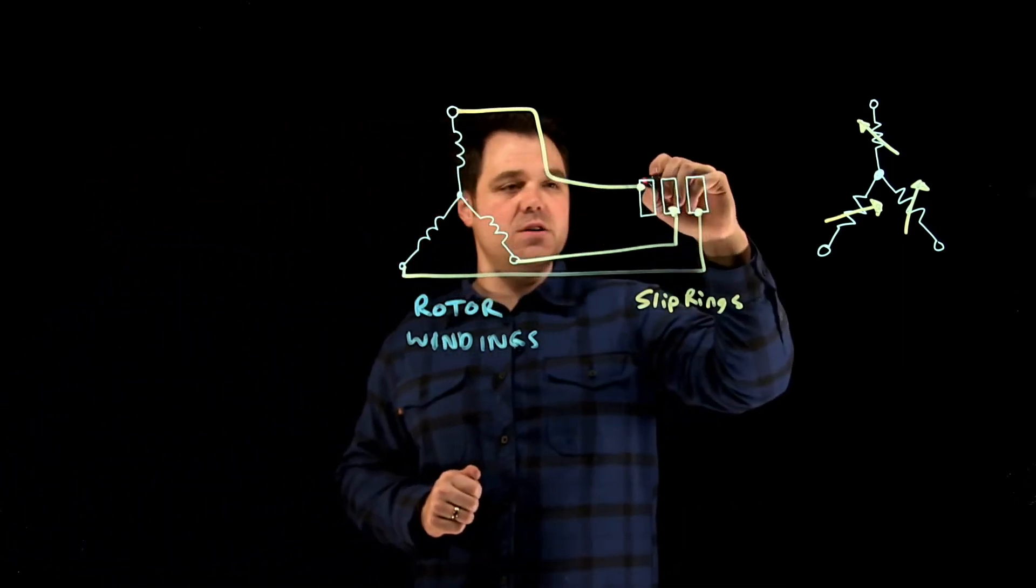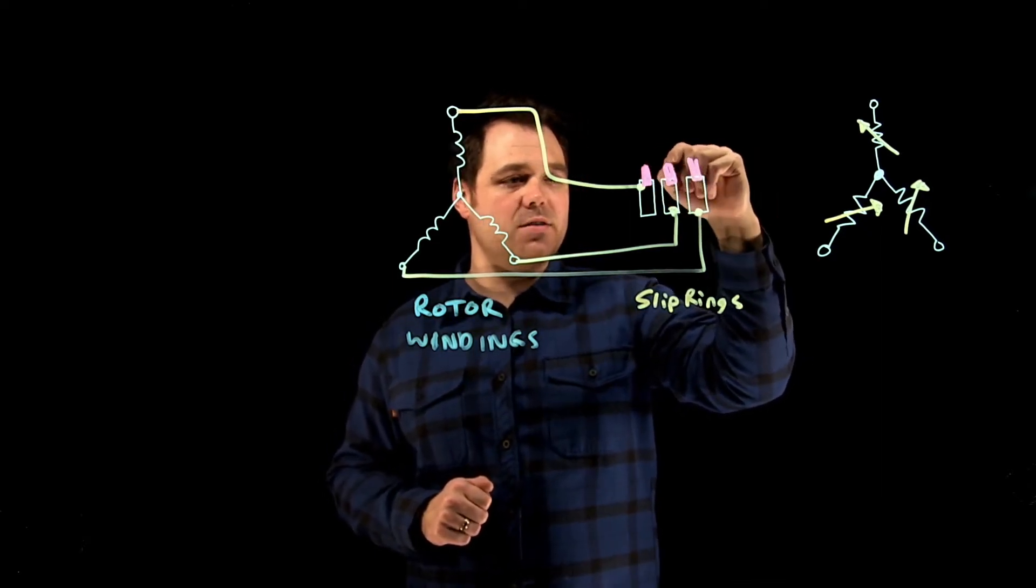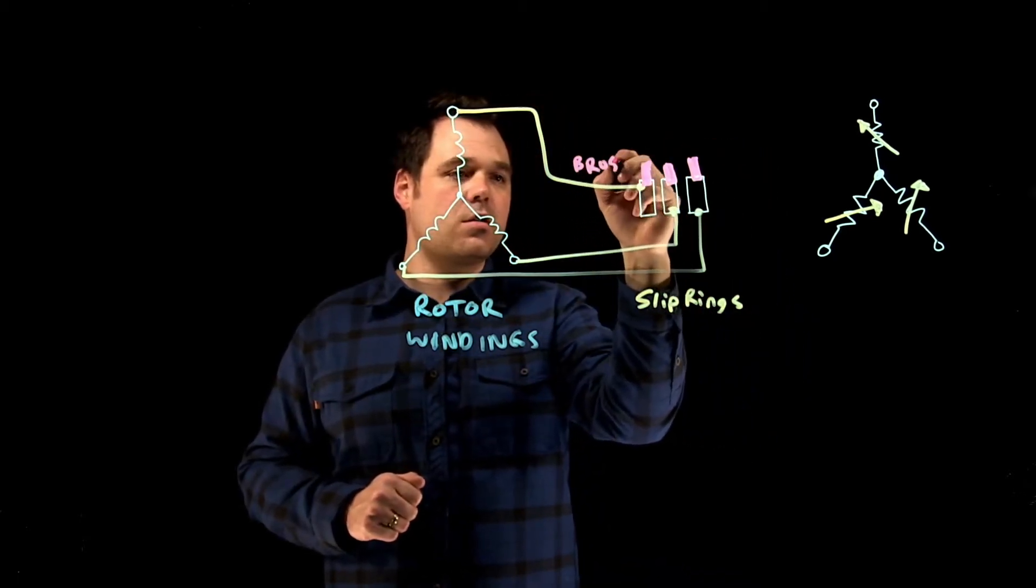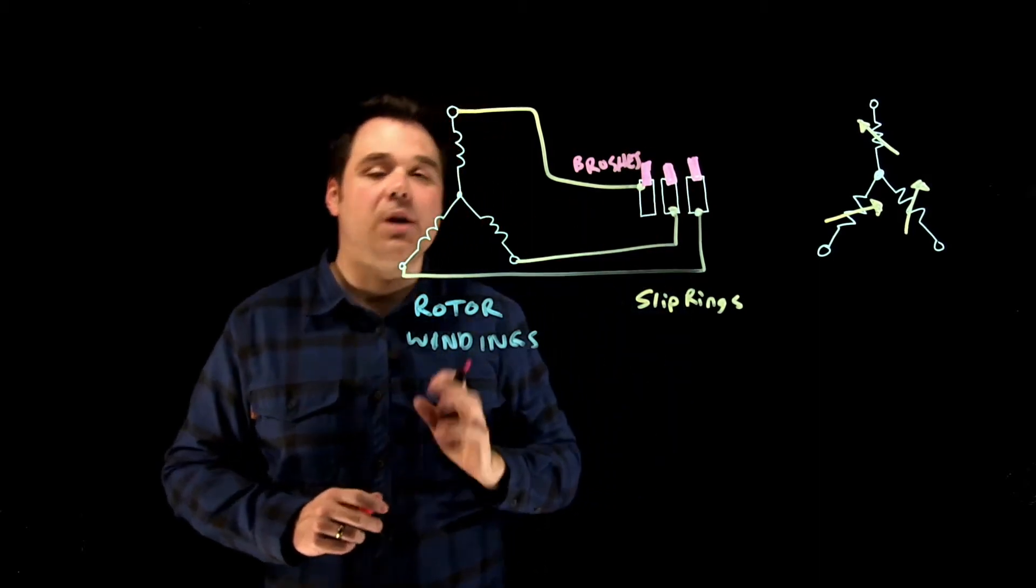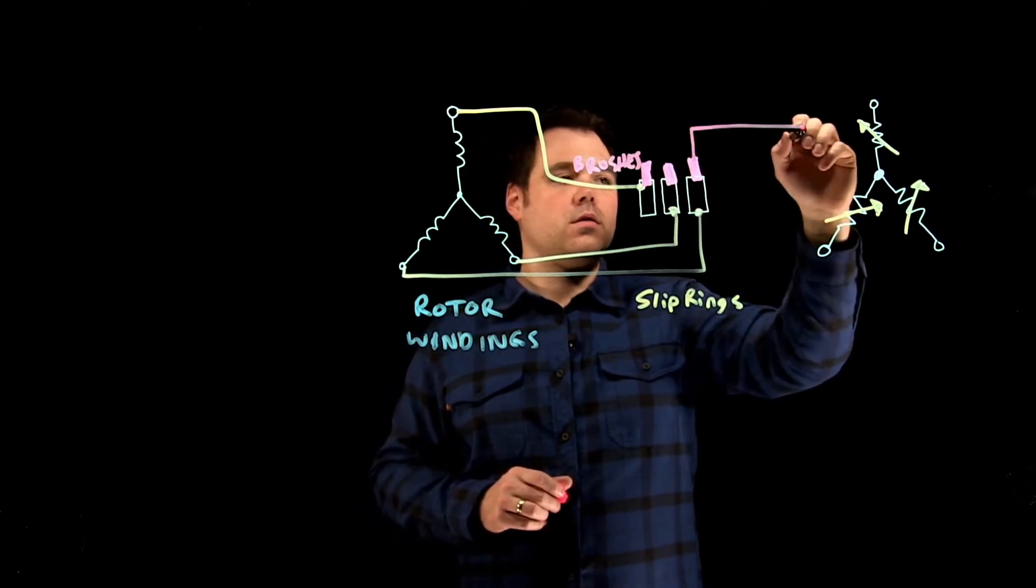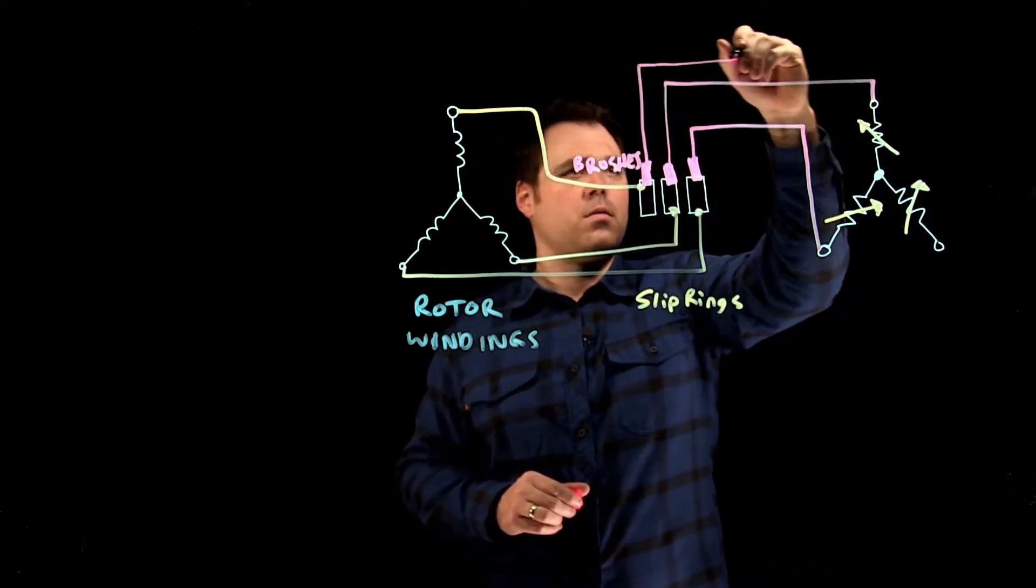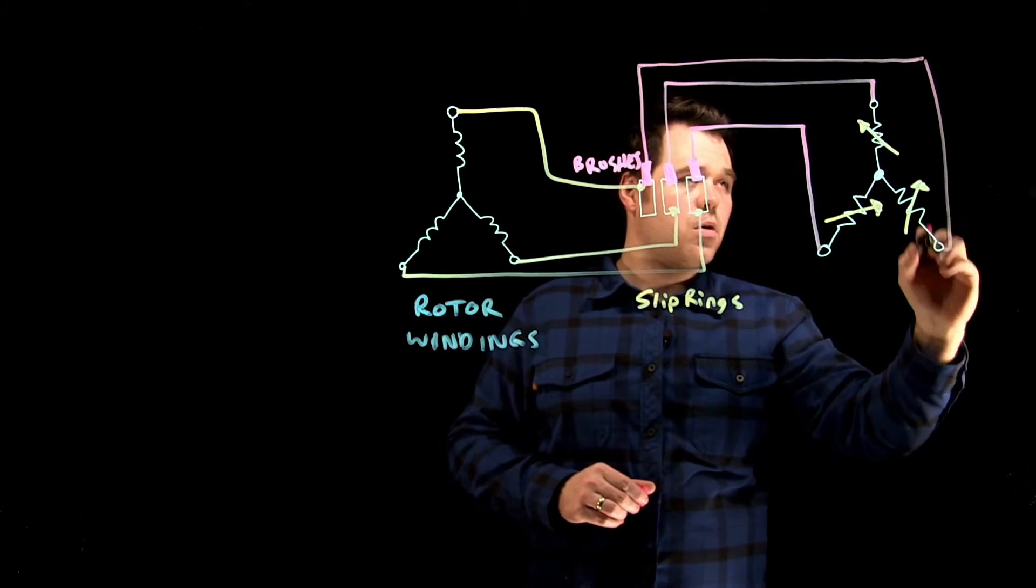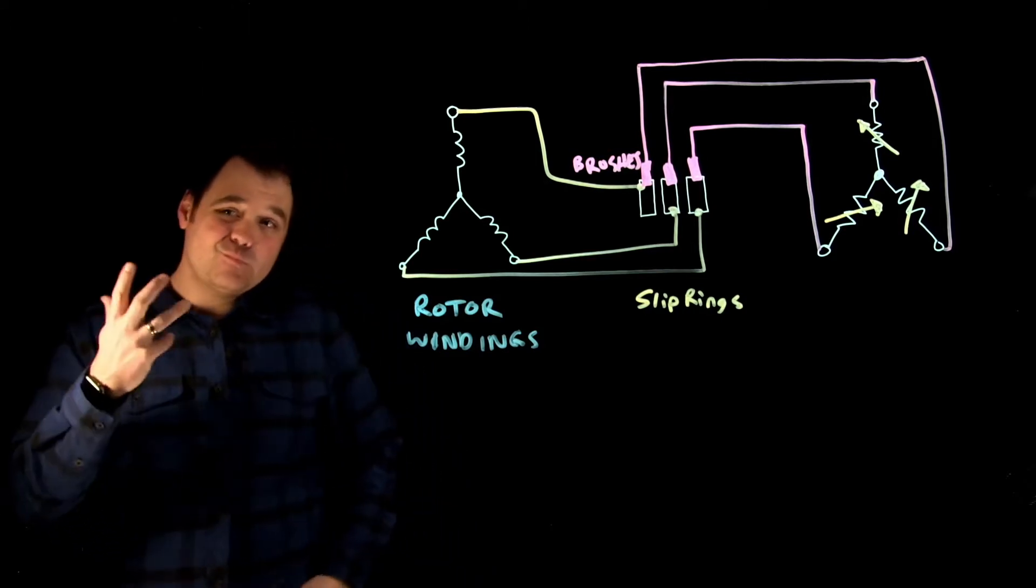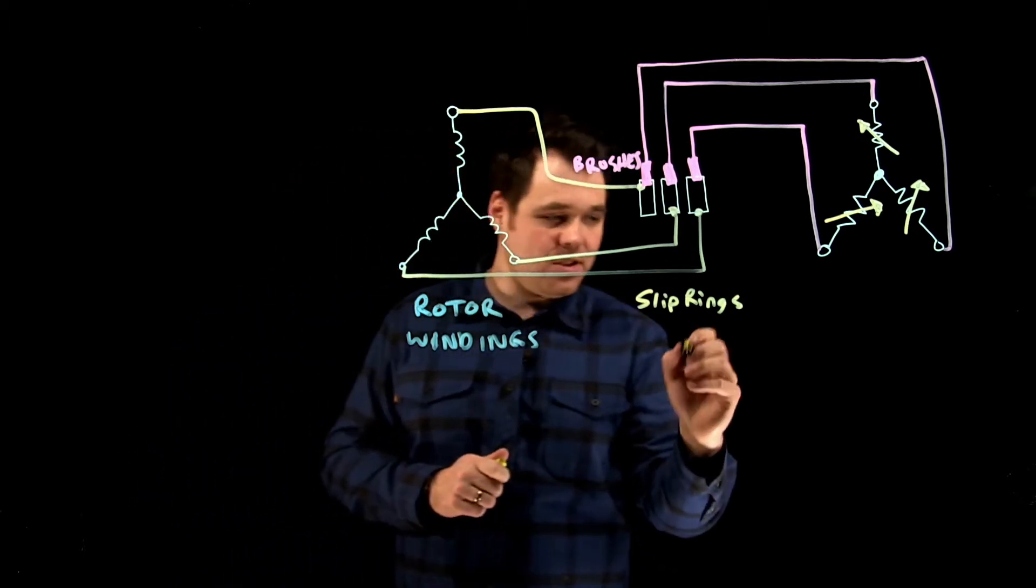Then from the shaft of the rotor, we use brushes, which basically rest on the slip rings to basically provide a path for current to flow. So those are brushes. Okay, now from the brushes, the brushes are going to connect over to my external resistor, kind of like that. So now the idea here is with this external resistor bank, what I can do is at start.